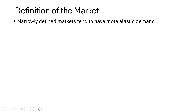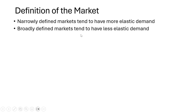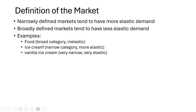Definition of the market is the third determinant. Narrowly defined markets tend to have more elastic demand, while broadly defined markets tend to have less elastic demand. For example, food is a broad category and tends to be more inelastic. Ice cream is a narrower category, so it tends to be more elastic. Vanilla ice cream is a very narrowly defined market, so it tends to be very elastic — there are many substitutes like chocolate ice cream and strawberry ice cream.